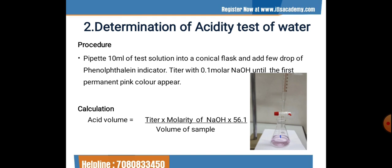The procedure is similar to the previous one: pipette 10 ml of test solution into a conical flask and add a few drops of phenolphthalein indicator. Titrate with 0.1 molar NaOH until the first permanent pink color appears. The appearance of light pink color at the endpoint indicates that the total amount of acidic component present in the water is completely neutralized, and the water sample is becoming slightly basic in nature.